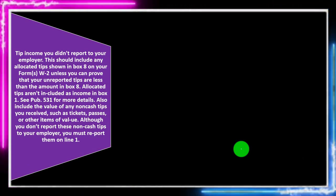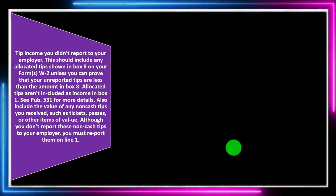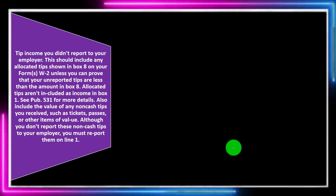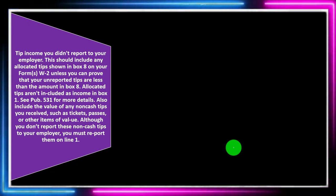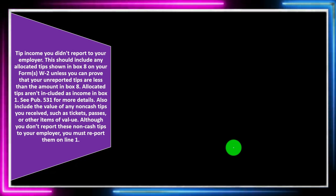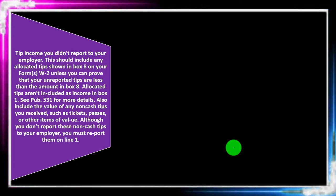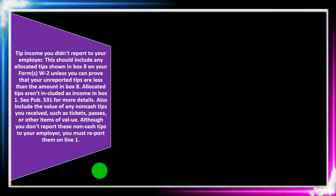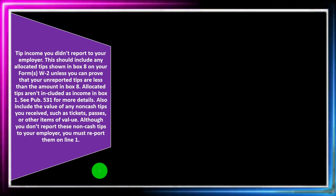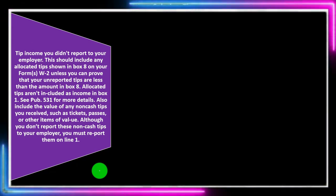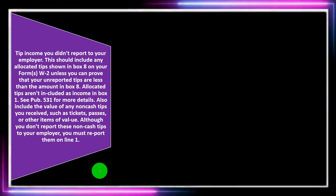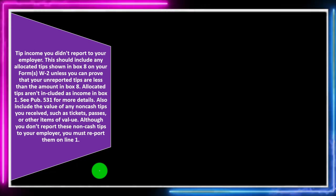Tips you didn't report to your employer must also be included. Tips are always an area of IRS scrutiny — they used to be paid in cash, which is hard to track, hence tip reporting requirements. This should include any allocated tips shown in Box 8 of your W-2, unless you can prove your unreported tips are less than that amount. Allocated tips aren't included in Box 1. Also include the value of any non-cash tips such as tickets, passes, or other items of value.